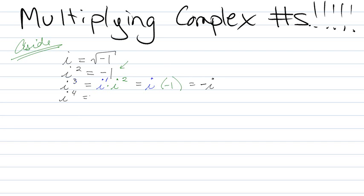i to the fourth now. That's equivalent to i squared times i squared. 2 plus what is 4? 2. i squared is negative 1, this other i squared is negative 1. Negative 1 times negative 1 is positive 1. Yay! 1.